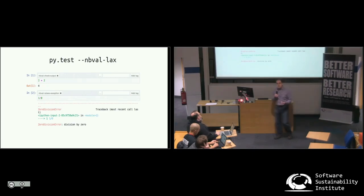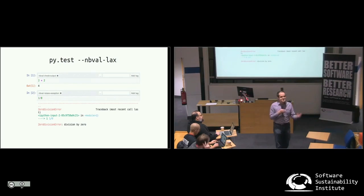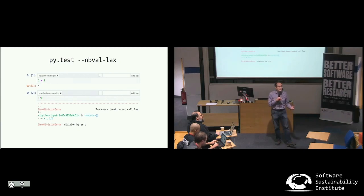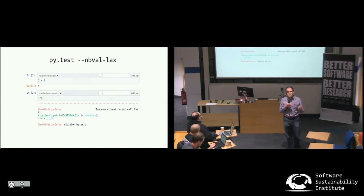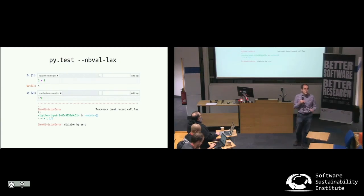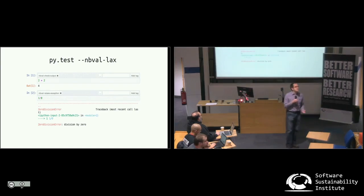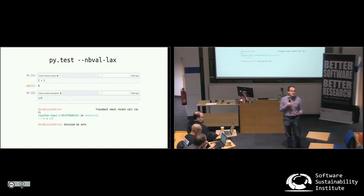Hopefully I also don't need to explain the value of testing software in the room at the Software Sustainability Institute event — I think that's pretty universally agreed upon here. So what I'm here to talk about is a tool we've been developing called AnyVal, which allows you to do some kind of testing and validation of your Notebooks, so that you can check that as the code your notebooks use changes and as the notebooks themselves change, that they're not breaking, and that you can still run those notebooks successfully.